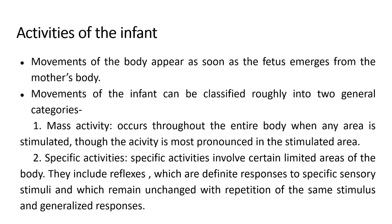Now we will see what are the activities of the infant. Movements of the body appear as soon as the fetus emerges from the mother's body. The movements of the infant can be classified into two categories: mass activity and specific activities. Mass activity occurs throughout the entire body when any area is stimulated, though the activity is most pronounced in the stimulated area. Whenever the infant carries out any one activity, it covers the whole body — that is called mass activity.